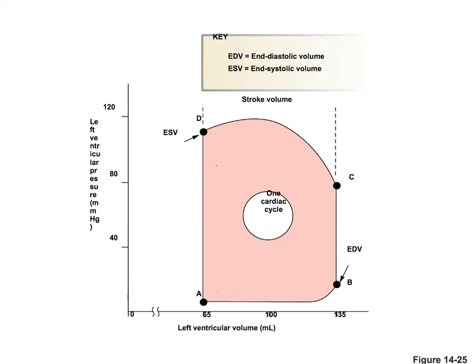Now let's look at the pressure-volume diagram and its segments. From E to B, we see no change in pressure but a change in volume — this is passive filling into the ventricles, and the atria contract to push blood in. From B to C, there is no change in volume but an increase in pressure. This is called isovolumic contraction, where the ventricles build up enough pressure to close the AV valve and open the aortic valve, without changing volume.